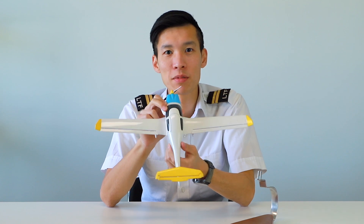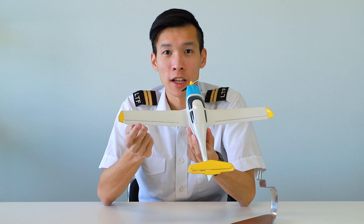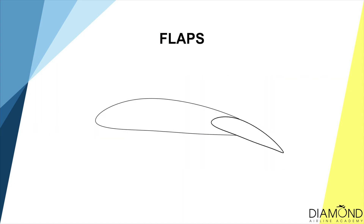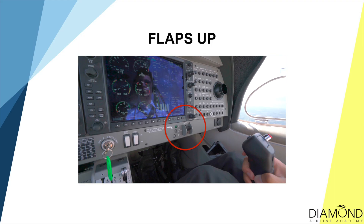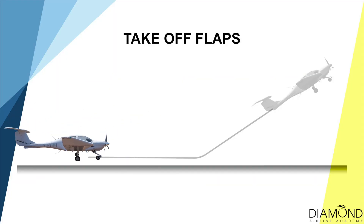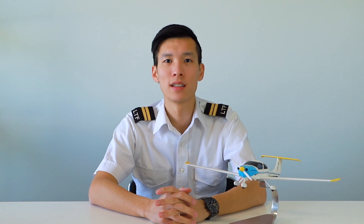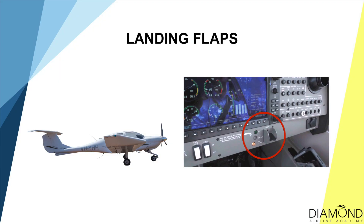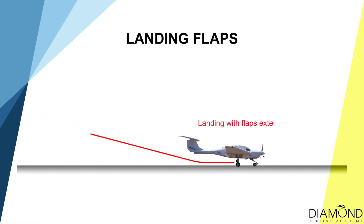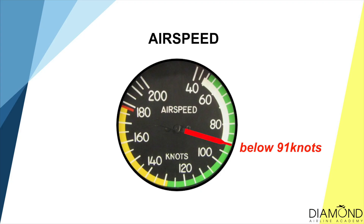The next ancillary control is the flaps. The flaps are the trailing edge devices between the body of the aircraft and the ailerons. Unlike ailerons, flaps can only go downwards. When we deploy the flaps, they increase both lift and drag. In the Diamond DA-40, we have three flap settings. The first is flaps up — no flaps deployed. The second is takeoff flaps: deploying them allows us to take off in a shorter distance, but they are only allowed below 108 knots. The third is landing flaps, which create more drag than lift to help us slow down to a safe landing speed. Landing flaps are only allowed below 91 knots, so check speed before lowering the flaps.